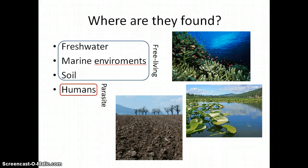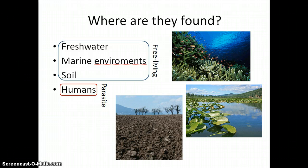The majority of amoebas are free-living, meaning they don't need a host cell and live in freshwater or marine environments and are very abundant in soil. The reason being that the contractile vacuole in the amoeba allows for them to live in a moist or wet environment.